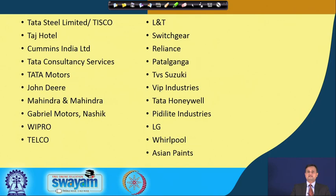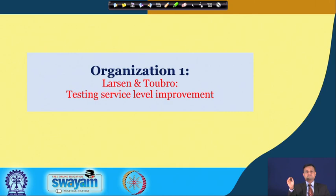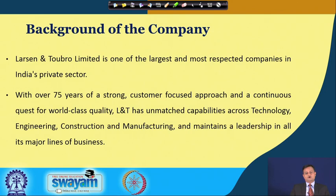Let us discuss organization one: Larsen and Toubro (L&T). One process where they successfully implemented Six Sigma is testing service level improvement. L&T is one of the largest and most respected companies in India's private sector, with over 75 years of strong customer-focused approach and continuous quest for world-class quality.